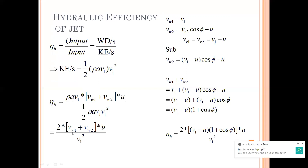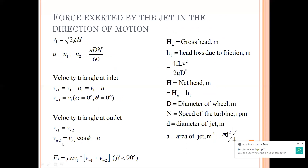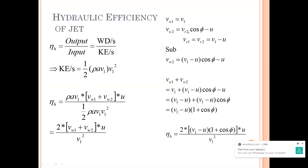Now I want to simplify this further. From the inlet and outlet triangles, vw1 and vw2 are in terms of v1 and u. From the inlet velocity triangle, vw1 is equal to v1. For vw2: it is equal to vr2 * cos(phi) minus u. Since vr2 = vr1 = v1 minus u, substituting gives vw2 = (v1 - u) * cos(phi) - u. So vw1 + vw2 = v1 + (v1 - u) * cos(phi) - u.